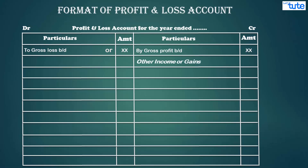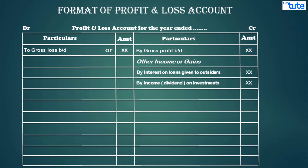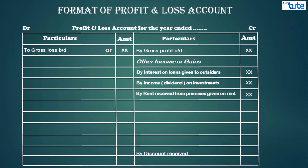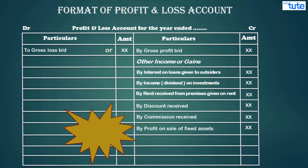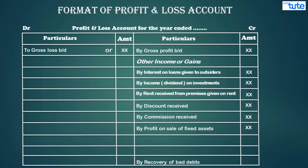Next we have other income. Other income includes amounts received by way of interest on loans given, dividend received on amounts invested in shares, rent received from premises given on rent, discount received, commission received, profit on sale of fixed assets, and so on. Gains include amounts received by the business by way of recovery of bad debts, subsidies, or grants received. These cover all possible items on the credit side of the profit and loss account.